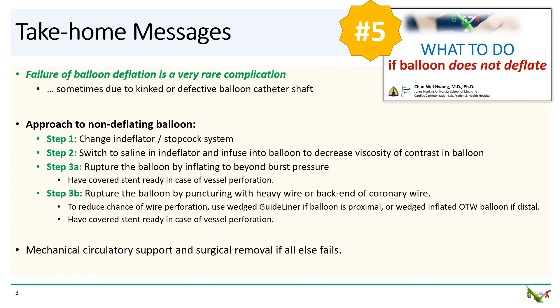Step 3a: try to rupture the balloon by inflating it beyond burst pressure. Usually more than 30 atmospheres are required, and obviously have a covered stent ready in case of vessel perforation. Step 3b: try puncturing the balloon with a stiff wire or the back end of a coronary wire. Remember to use a guideliner or an inflated OTW balloon to minimize the chance of wire perforation. Finally, if all else fails, you'll need to put in mechanical circulatory support and call for surgical removal.